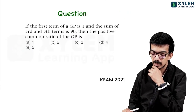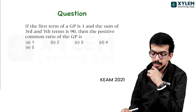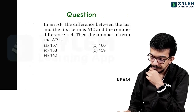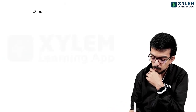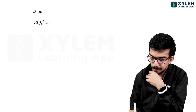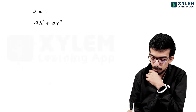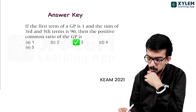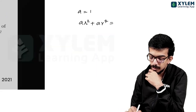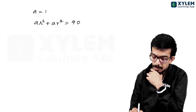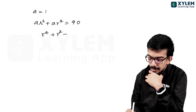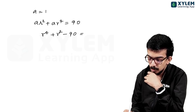Then the sum of the third and fifth terms is 90, then the positive common ratio of the GP is. The sum of the third and fifth terms: a·r² plus a·r⁴ is equal to 90. So basically, a times (r⁴ plus r² minus 90) is equal to 0.